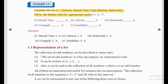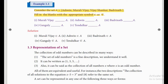Look at Example 1.1. Consider the set A equal to {Ashwin, Murali Vijay, Vijay Shankar, Batrinath} — a set of 4 cricketers. The question is: fill in the blanks with the appropriate symbol — 'belongs to' or 'does not belong to.' If that element is in the set we use 'belongs to'; if it is not in the set we use 'does not belong to.'